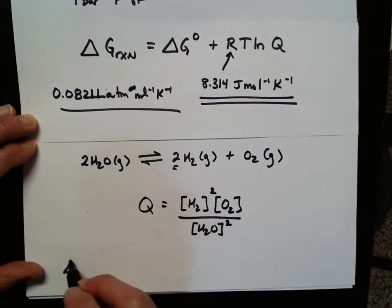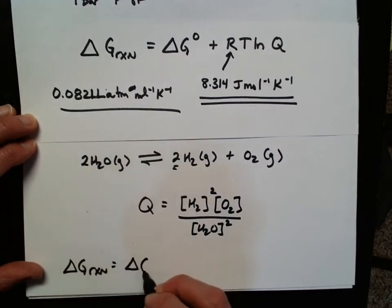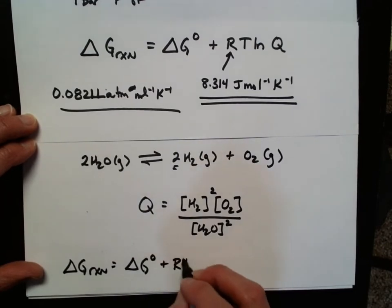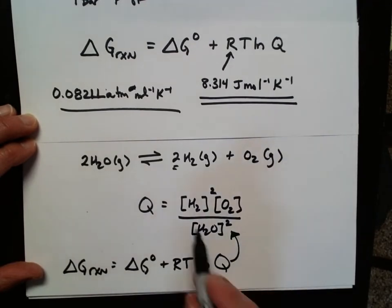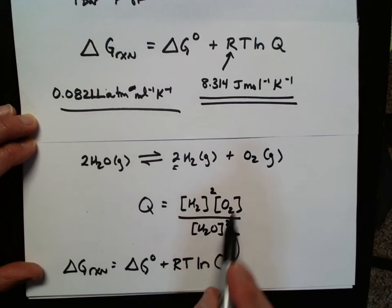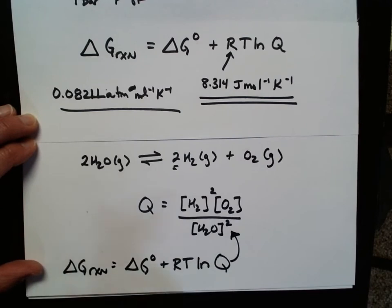So for this particular reaction, I could find delta G of the reaction by finding the standard delta G, whatever that happens to be. And I'd add RT times the natural log of Q, which would be found by this right here. And I would just plug in the values of hydrogen gas, oxygen gas, and water, gaseous water, to find out what the delta G for the reaction under those particular conditions would be.